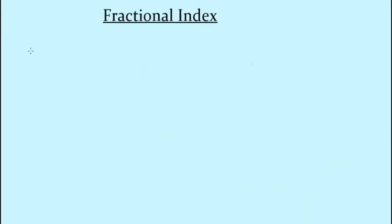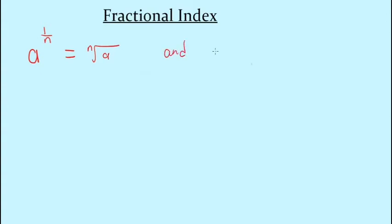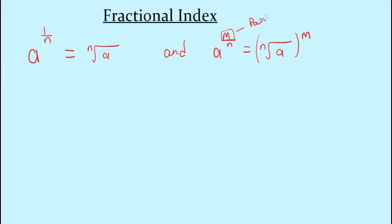The next law is the fractional index, which is when we have a fraction as the power or exponent. The rule states that a raised to one over n equals the nth root of the base — the denominator tells the type of root. When the numerator is not one, a to the m over n equals the nth root of the base all raised to the m power. The numerator is the power and the denominator is the type of root.